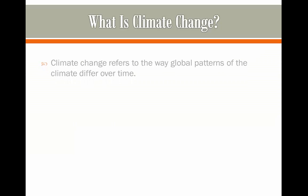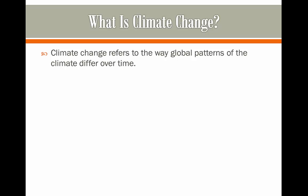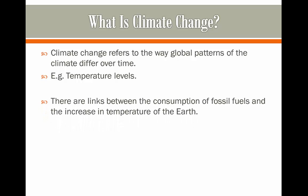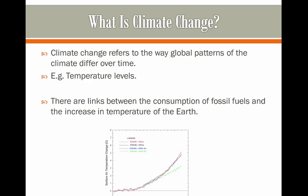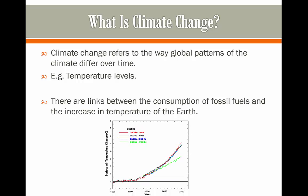What is climate change? Climate change refers to the way global patterns of the climate are going to differ over time — for example, temperature levels. There are links between the consumption of fossil fuels and the increase in the temperature of the earth, and this is down to the greenhouse effect. There is evidence to show that as we have been progressing in time and using more fossil fuels, the surface air temperature has been changing.